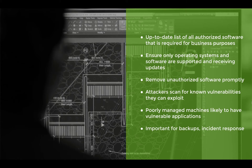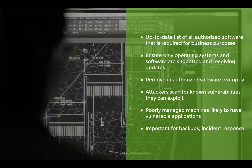As an attacker doing a pen test, we scan for known vulnerabilities to exploit — that's one of the first things done once access to a system is gained. If you have software or an operating system with a known vulnerability, that's an easy way into your organization. When we tie our hardware and software inventories together, poorly managed machines — computers IT has forgotten about, or users who still have administrative access from five years ago and are installing whatever software they want — are likely to have vulnerable applications that can be exploited and become entry or pivot points throughout your organization. Software inventory is also critical for backups and incident response.